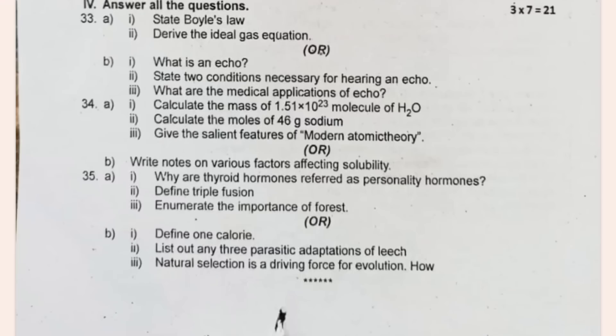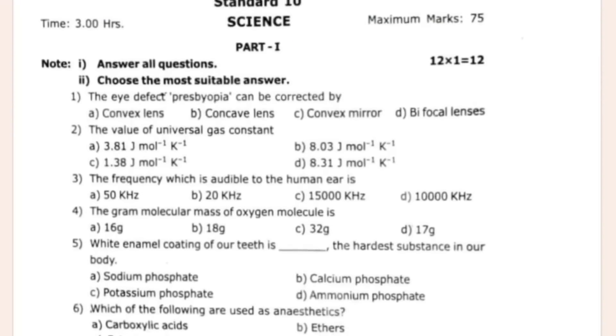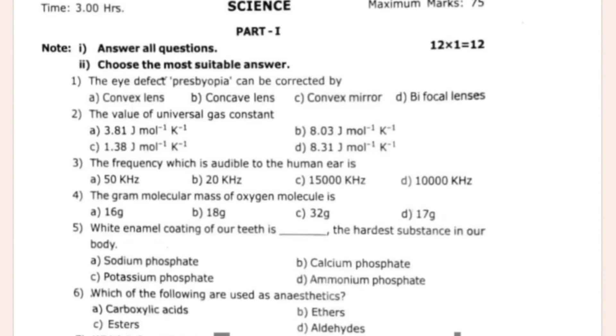State and derive the ideal gas sequence — Boyle's law. This is the video. You can see the screen. Physics, chemistry, biology. This is 6 marks. This is 1 mark. This is 3 marks. This is 1 mark. This is 2 marks. This is 1 mark. This has been 1 mark. You can see 1 mark, this is 2 marks.